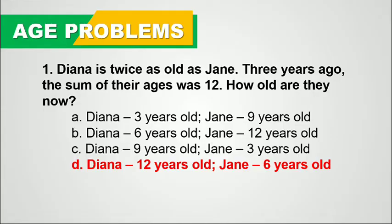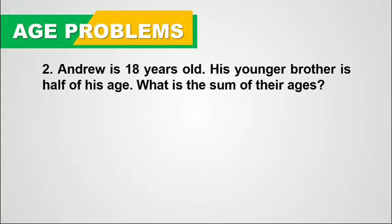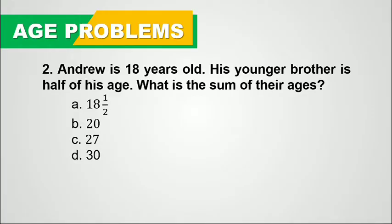Now let's have one more example. Andrew is 18 years old. His younger brother is half of his age. What is the sum of their ages? Is it letter A — 18 and a half? B — 20? C — 27? Or letter D — 30?